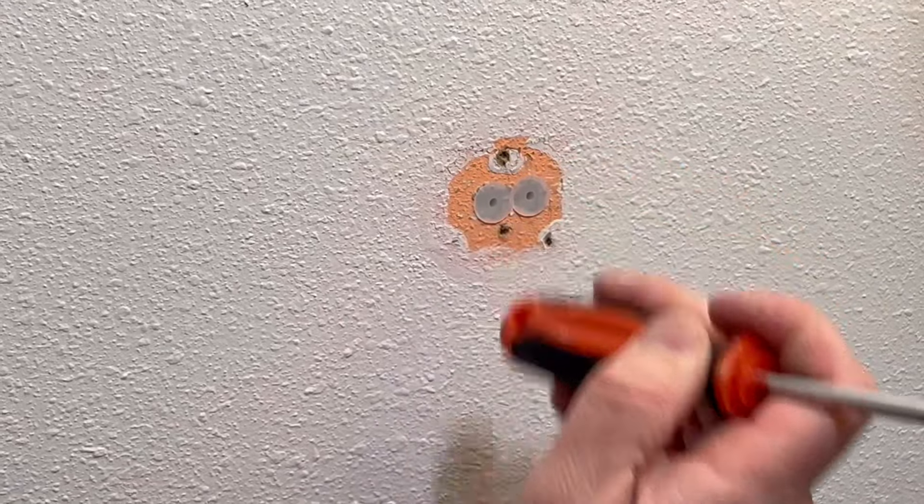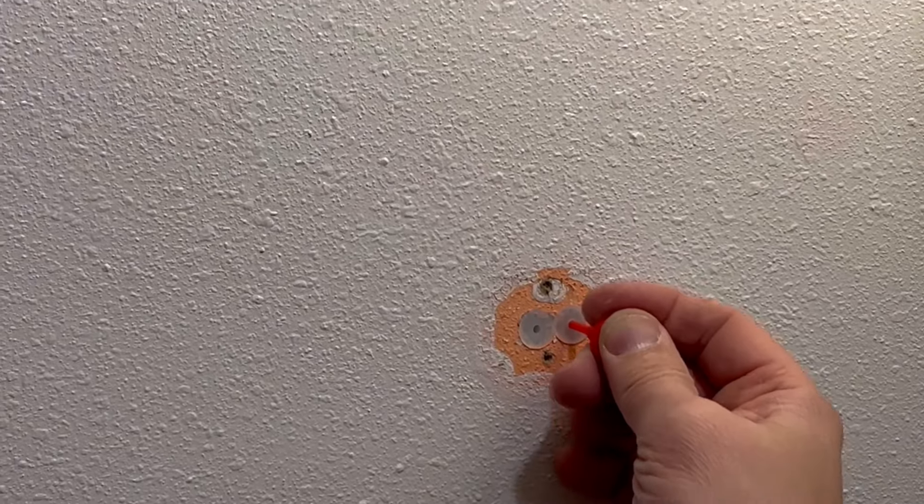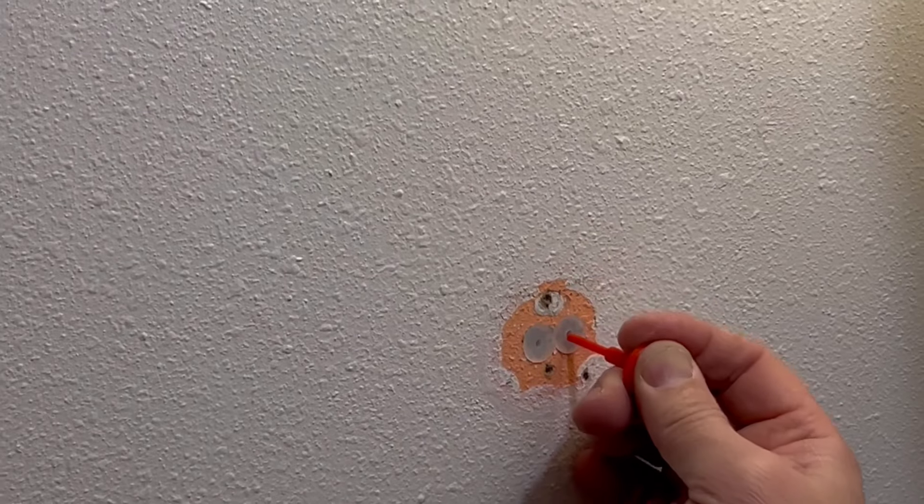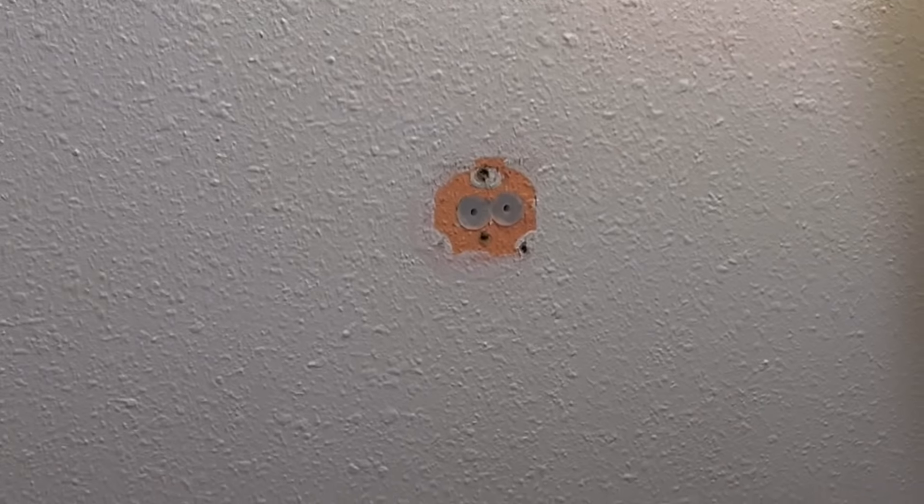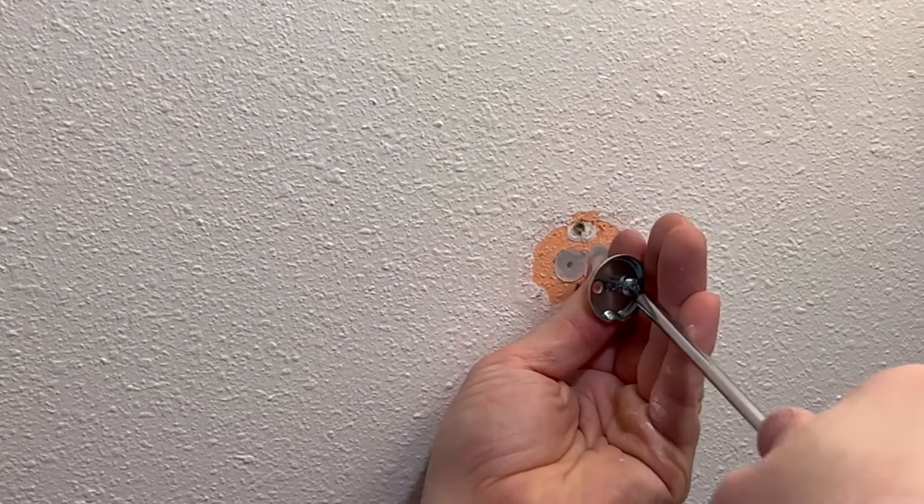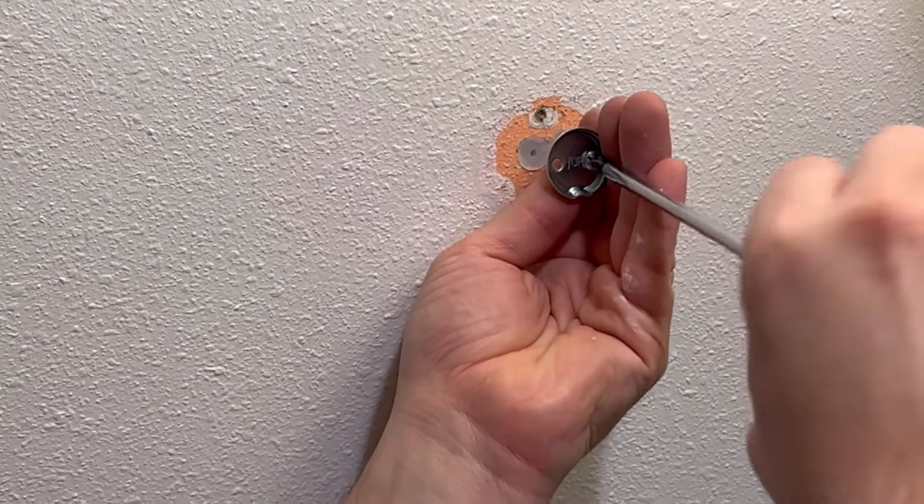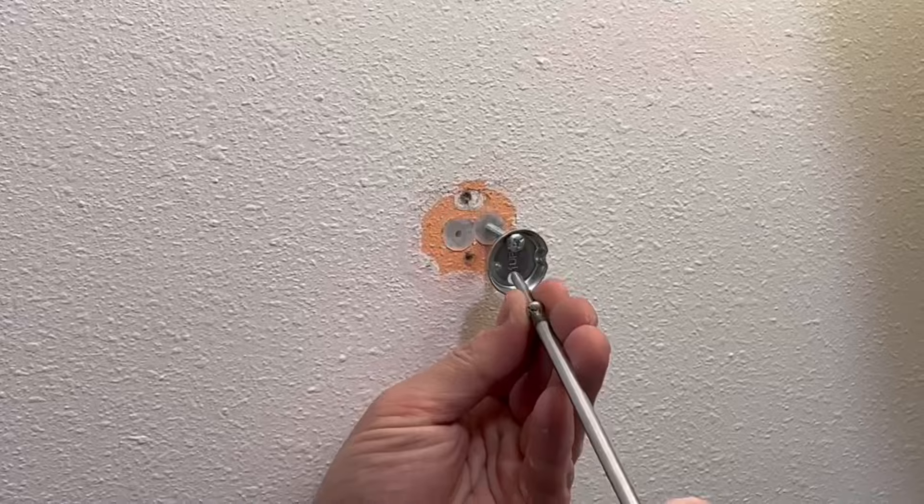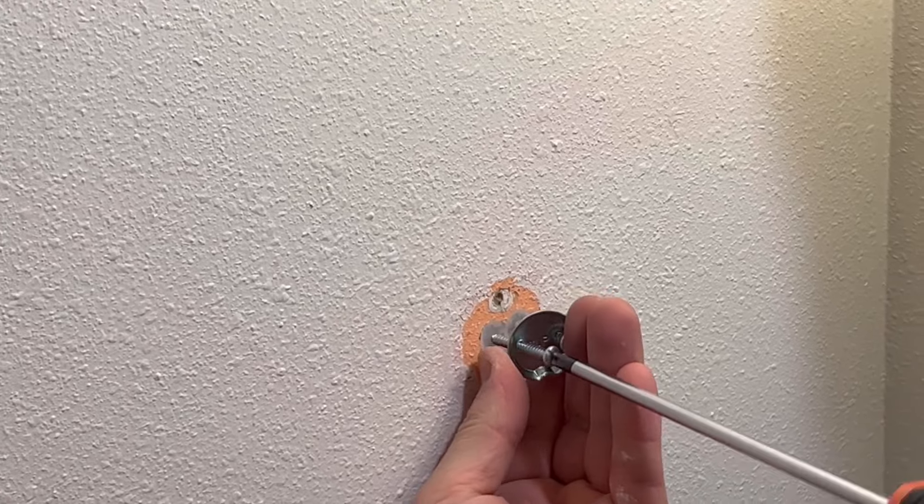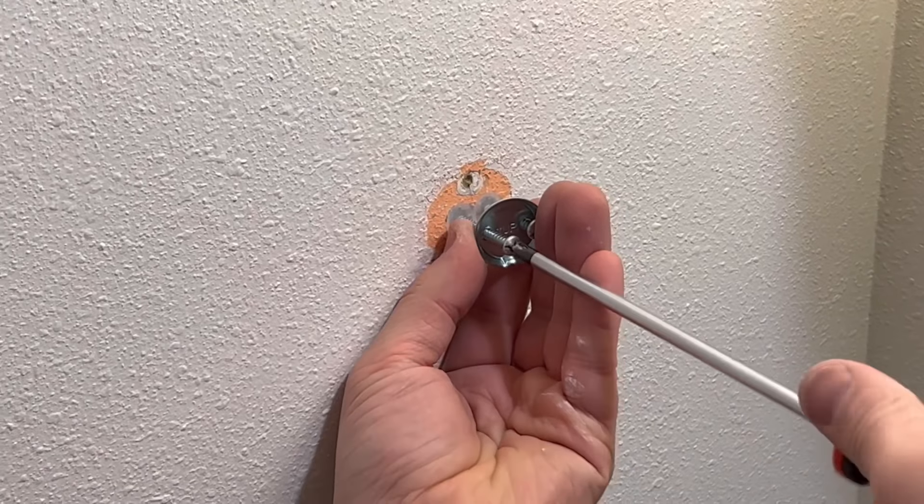Once the anchors are in you use this push pin to expand the anchors just like that. Then we use the bracket and provided screws to fasten this down to the wall just like that. First one in, let's start the second one.